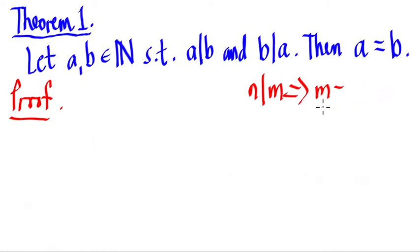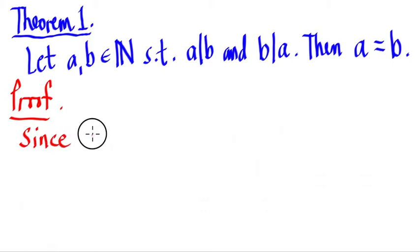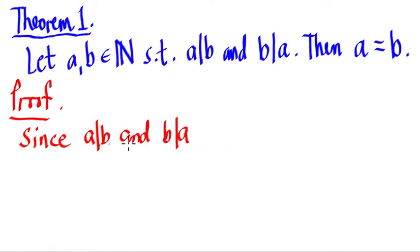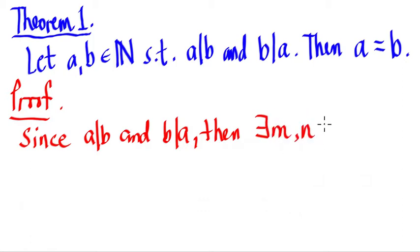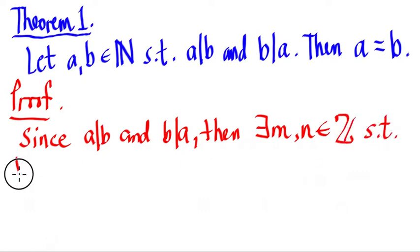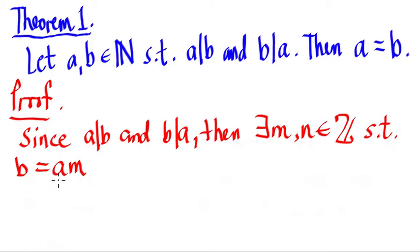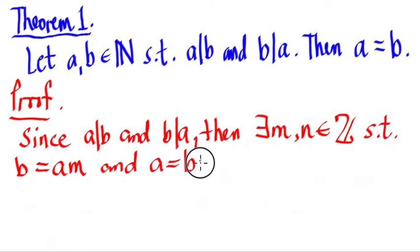Let's use that concept. Since a divides b and b divides a, then there exist some m and n in the integers such that if we multiply a by this certain m, it will give us b — in such a way that a is a factor of b. And a is equal to b times n for a certain n; if we multiply b by n, it will give us a.